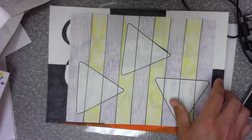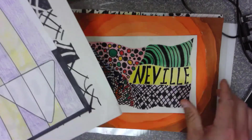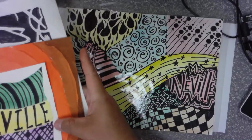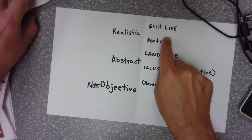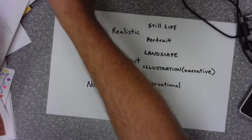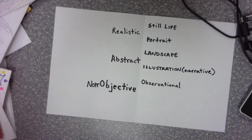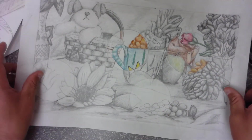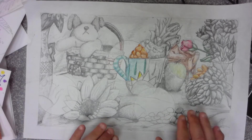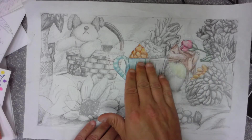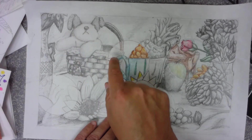So those are the three main types of art: realistic, abstract, and non-objective. Now let's talk about some different types of art. The first one is still life. A still life is when you put a bunch of objects together — a lot of times in art you see bowls of fruit. Here's an example of a still life: these are different objects set on a table with a backdrop, and the artist drew all the different parts — the mug, the stuffed animal, the basket.